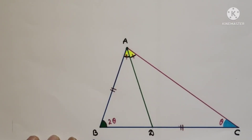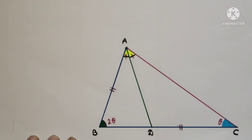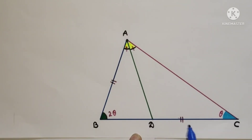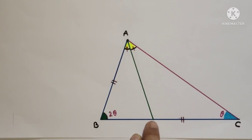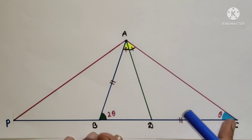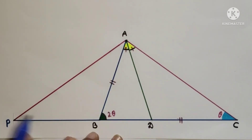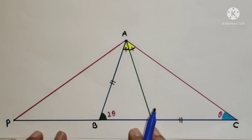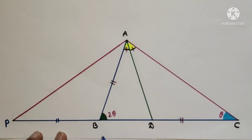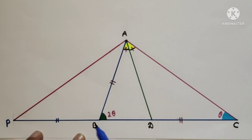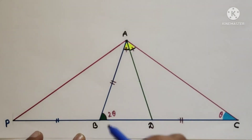To find the measure of angle BAC we need some constructions. I will show you two methods to solve this problem. The required construction for Method 1 is to extend CB up to point P such that BP is equal to CD. Since BP is equal to DC, and DC is equal to AB as already given, we can proceed.